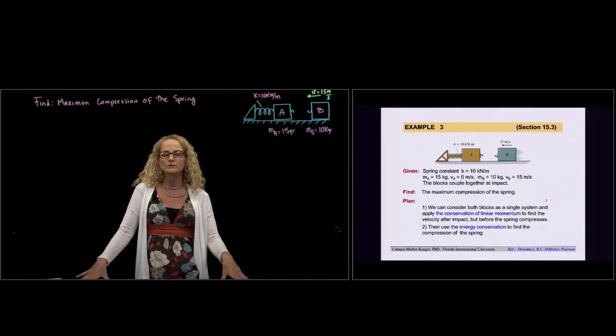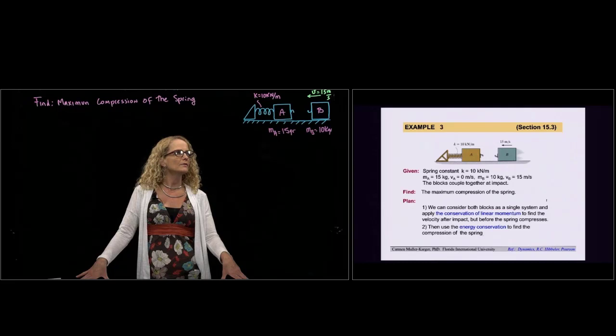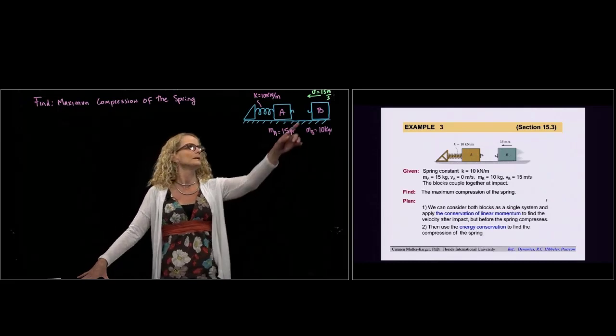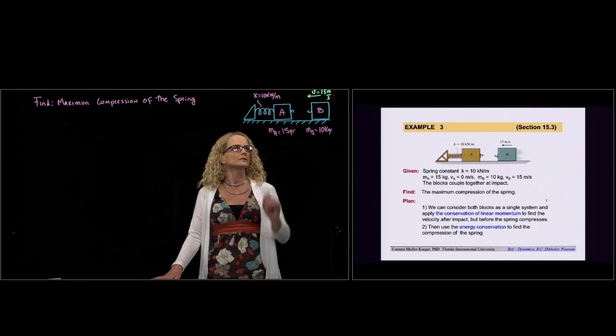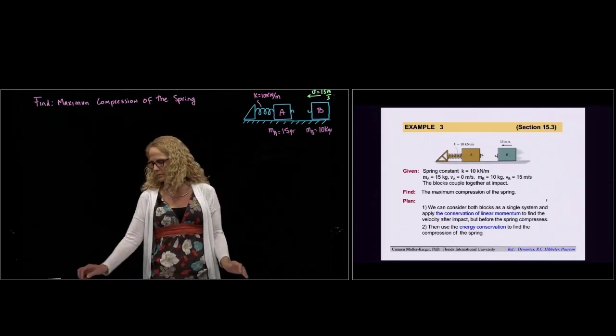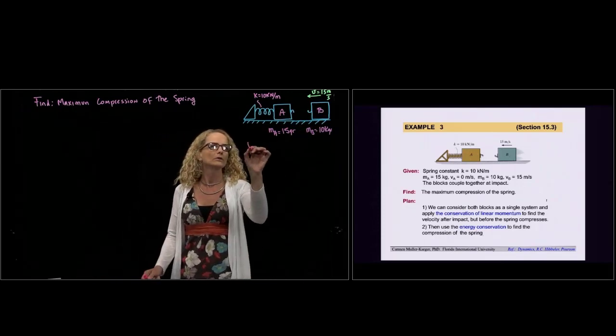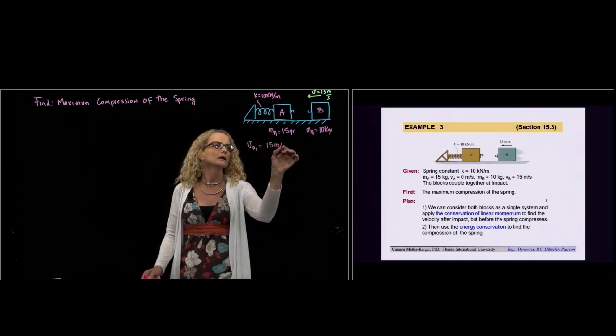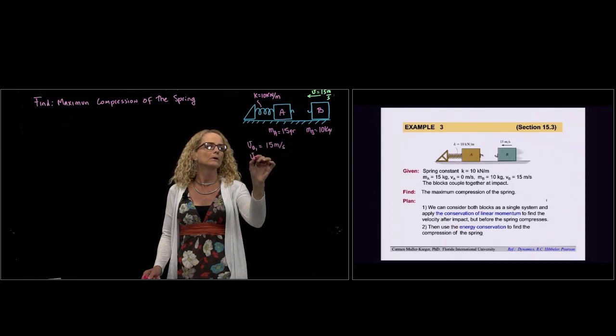This is example number three of section 15.3. So we have here two blocks. One is moving, block B is moving initially with a velocity of 15 meters per second, so we can actually say that the velocity B1 is 15 meters per second.